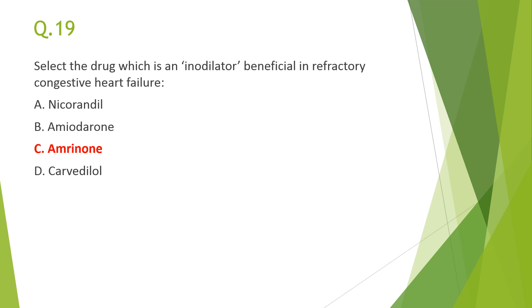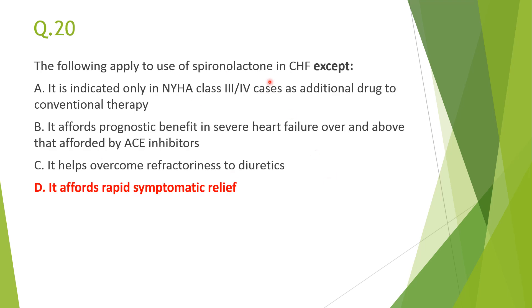Next: select the drug which is an inodilator beneficial in refractory CHF — answer C, inamrinone. Inamrinone is a phosphodiesterase 3 inhibitor that increases cyclic AMP level, causing increased inotropic action and vasodilatation — hence 'inodilator.' Increased cyclic AMP causes increased cardiac inotropic action as well as vasodilatation.